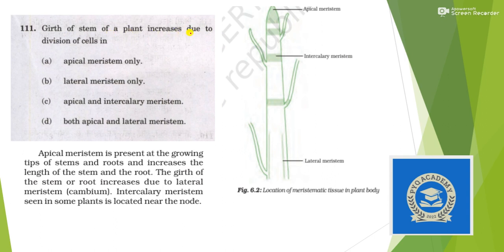Next: girth of stem of a plant increases due to division of which cells? The girth of stem or root increases due to lateral meristem. So the answer is lateral meristem — option B.